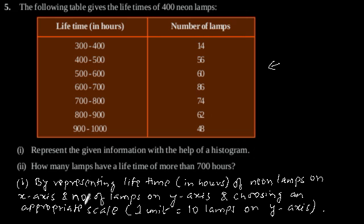The second part: how many lamps have a lifetime of more than 700 hours? So, from the table we can see that the lamps having a lifetime of more than 700 hours is of lifetime 700 to 800, 800 to 900, and 900 to 1000.